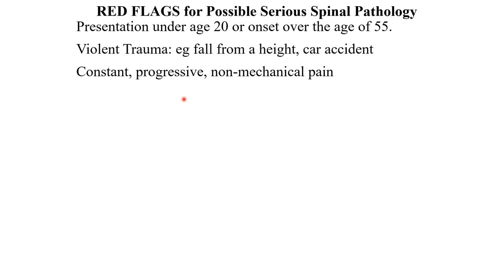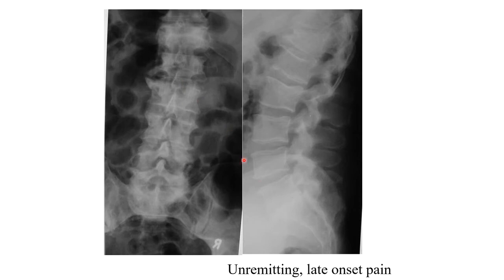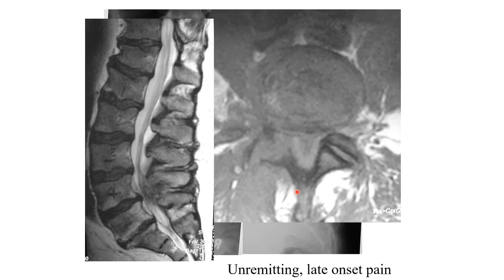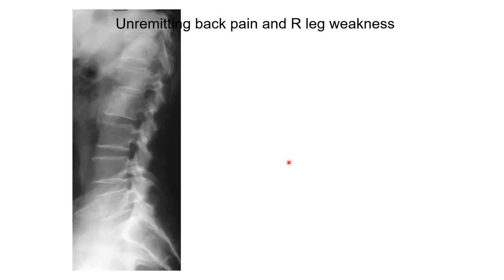Patients with constant progressive non-mechanical pain need investigation. Here's a patient with unremitting, late-onset pain who is older. The x-ray shows osteophytes in keeping with normal aging and loss of disc space height at L5-S1, but due to the unremitting ongoing pain this patient requires a full blood count, CRP, ESR, as well as an MRI scan. On his MRI you can confirm the degenerative discs, but his right facet joint is destroyed compared to the left — this patient in fact had septic arthritis of his facet joint.